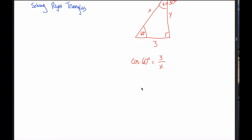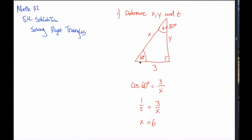The cosine of 60 degrees is something I know from my unit circle — that's one half. So I get one half equals 3 over x. To solve for x, I multiply the x up to one side and the 2 over to get x equals 3 times 2, in other words 6. So if this is a 60 degree angle and this side is 3, then x must be equal to 6.